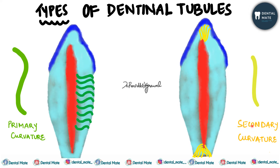Next is the secondary curvature of the dentinal tubules. These have a sinusoidal course over their entire length. They are present mostly near the root tip and along the incisal edges and cusp tips, and these tubules are basically almost straight.